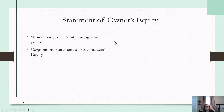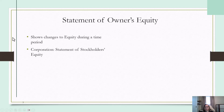The next one is the statement of owner's equity, which shows changes in equity during a time period. If it's a corporation, it would be the statement of stockholders' equity or shareholders' equity. But in many other businesses like a sole proprietorship or a partnership, it's simply the statement of owner's equity, so we're going to do it from the perspective of owner's equity.